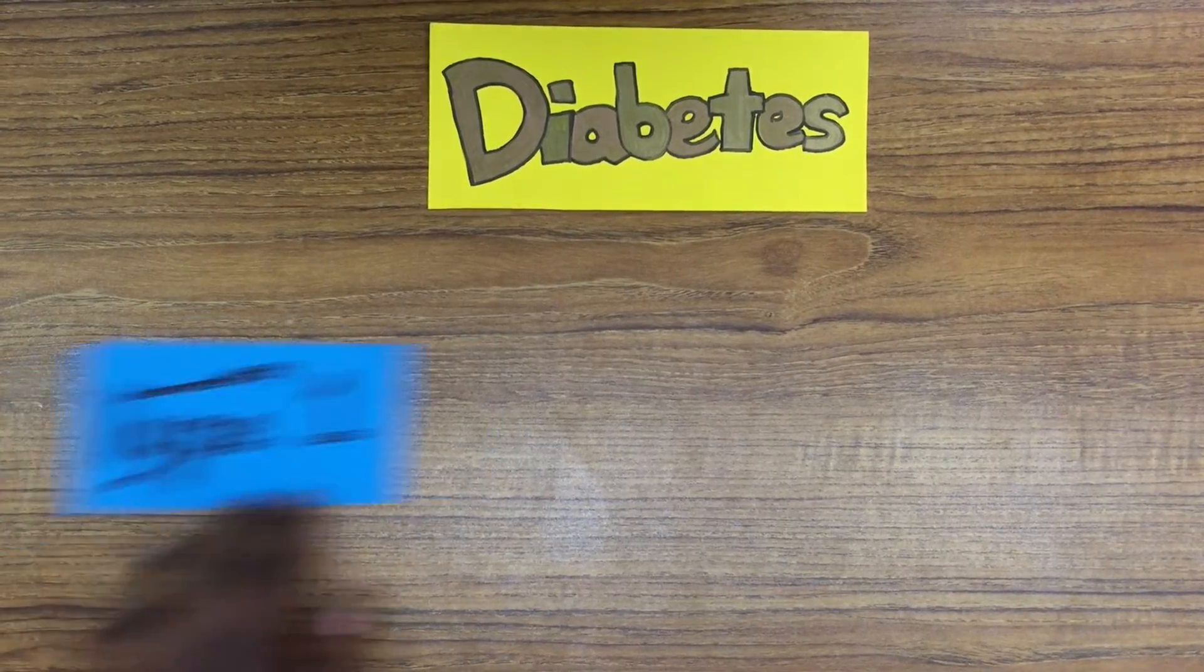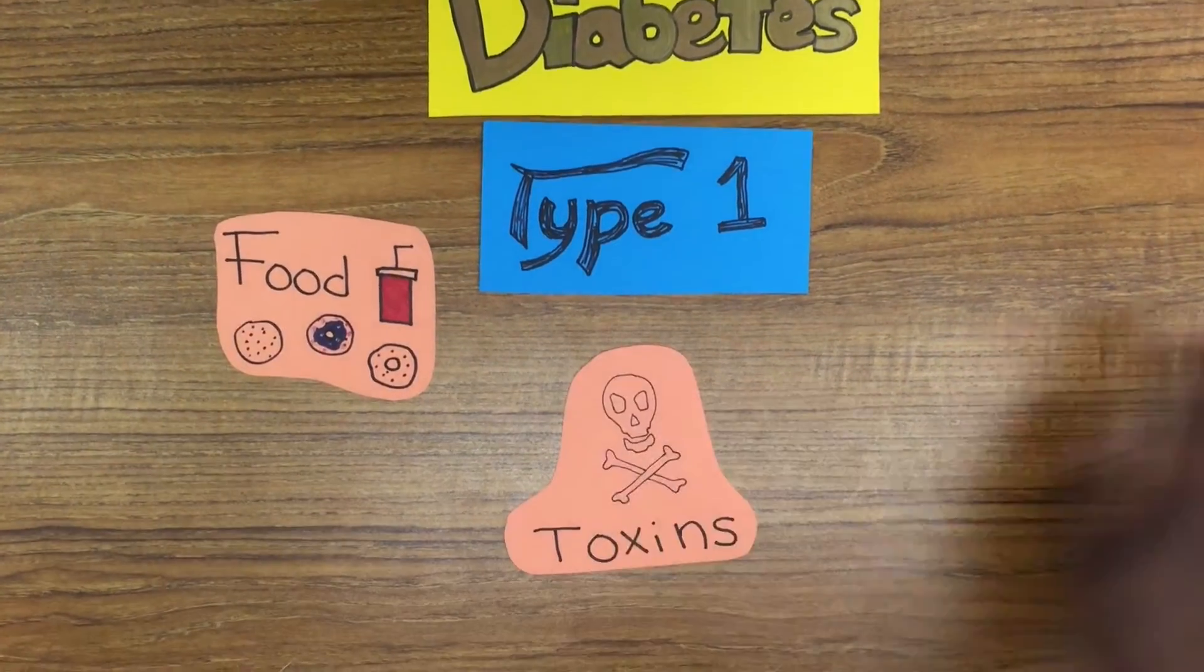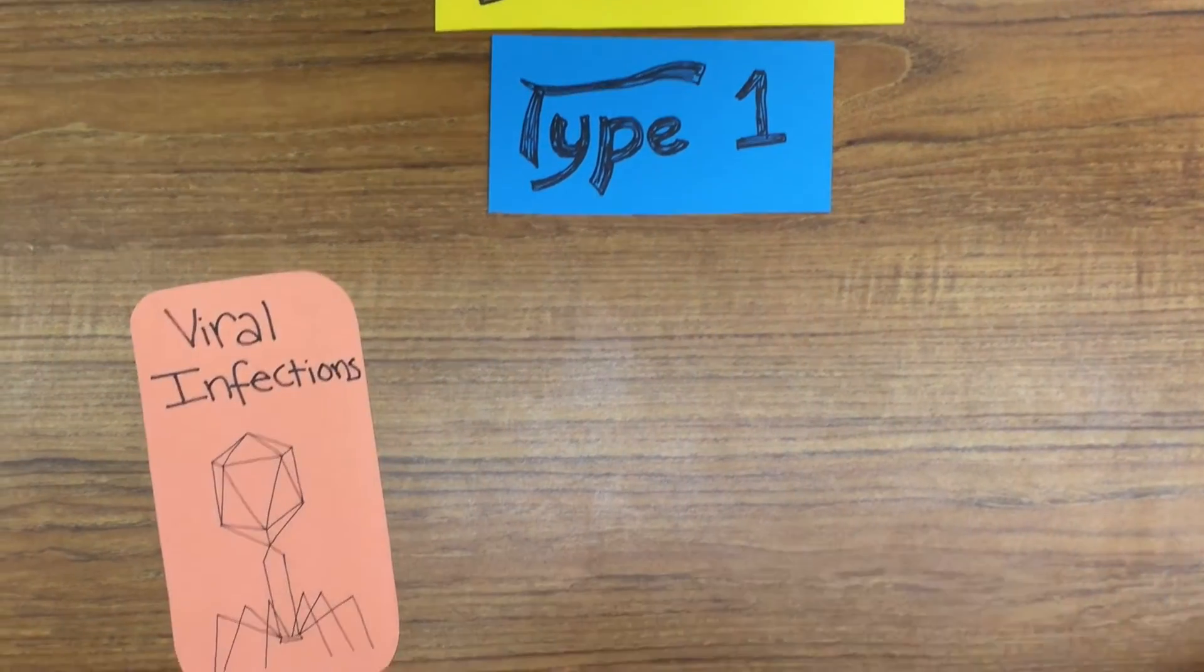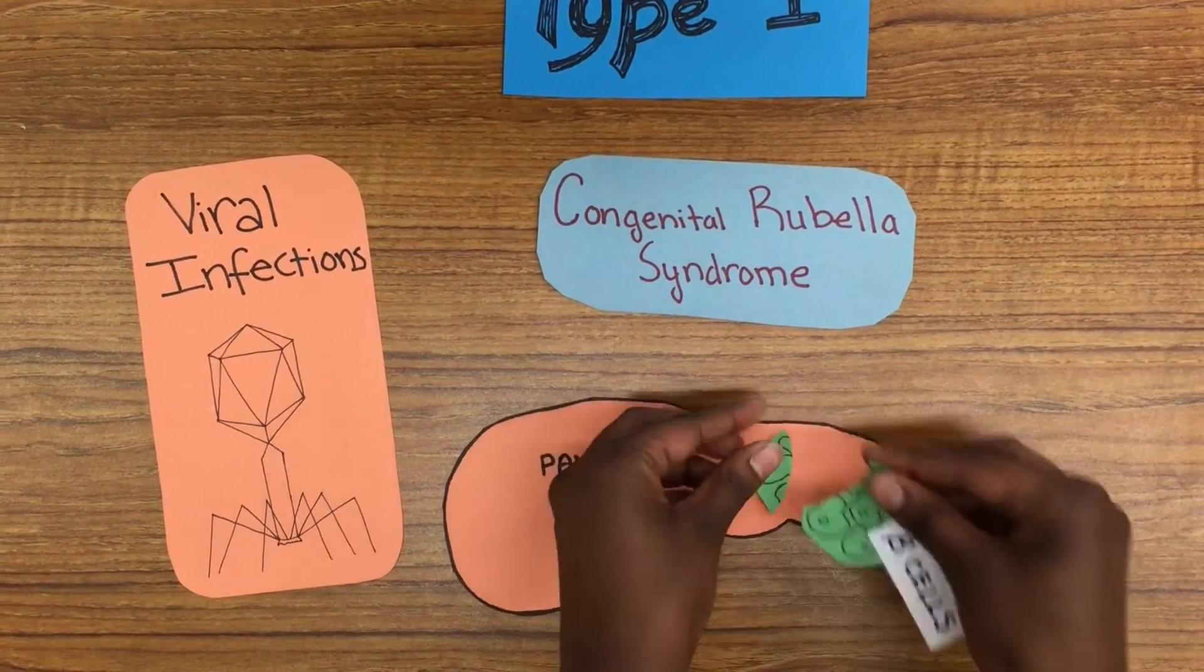Type 1 diabetes can be hereditary, but it can also be caused by environmental factors like food toxins or viral infections. It usually develops during winter as diseases like mumps and rubella are more prevalent. For example, congenital rubella is associated with beta cell destruction.